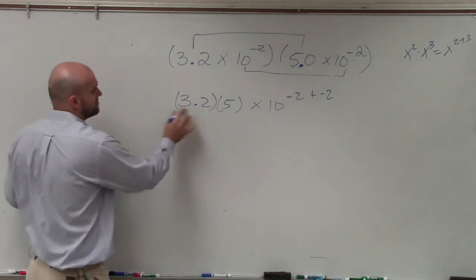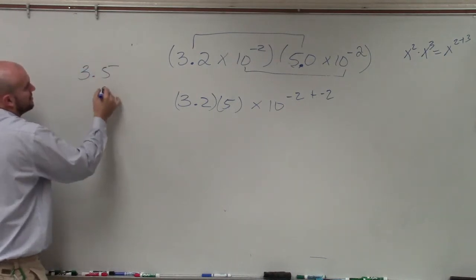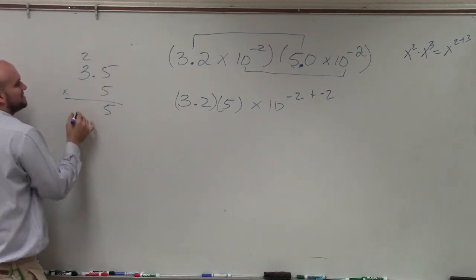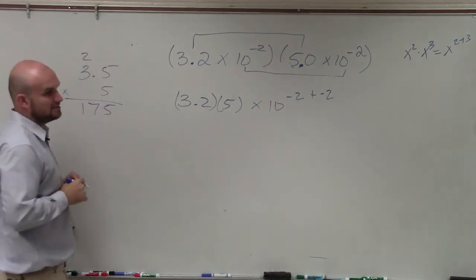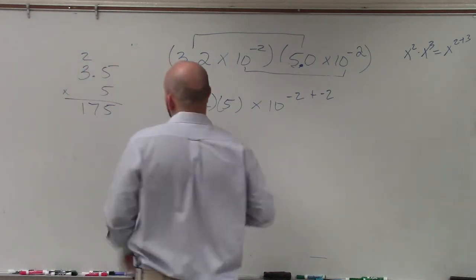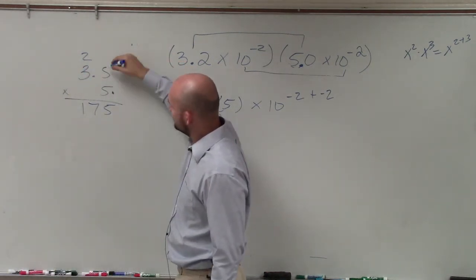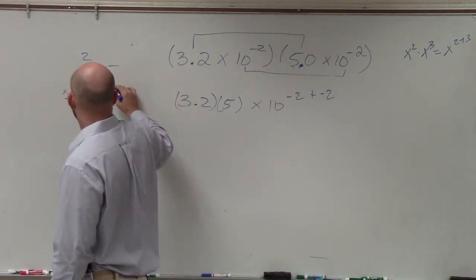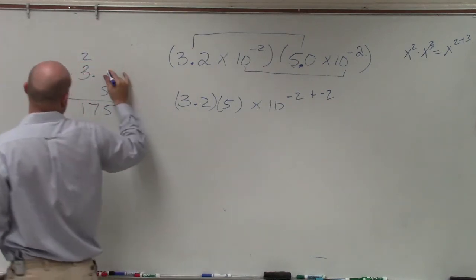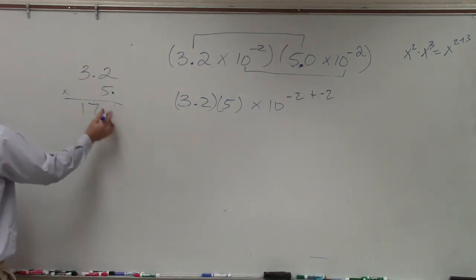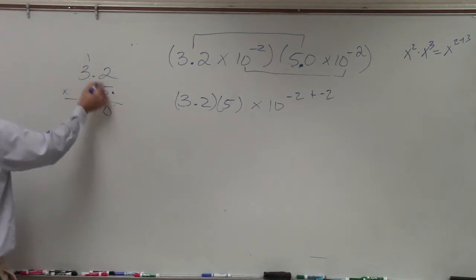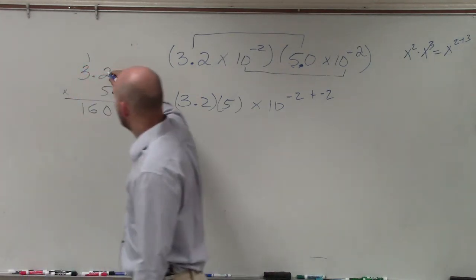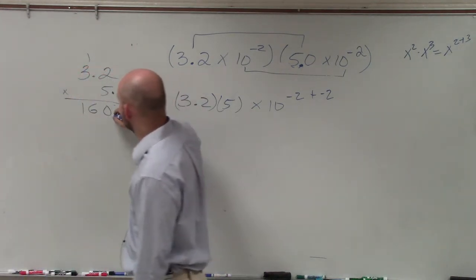In this case, I need to multiply these. If you guys forget how to multiply your decimals: 5 times 5 is 25, 5 times 3 is 15, plus 2 is 17. Then 5 times 2 is 10, making that 16. And then my decimal point is going to be over 1. So therefore, I have one decimal place, and I'm going to move it over there.